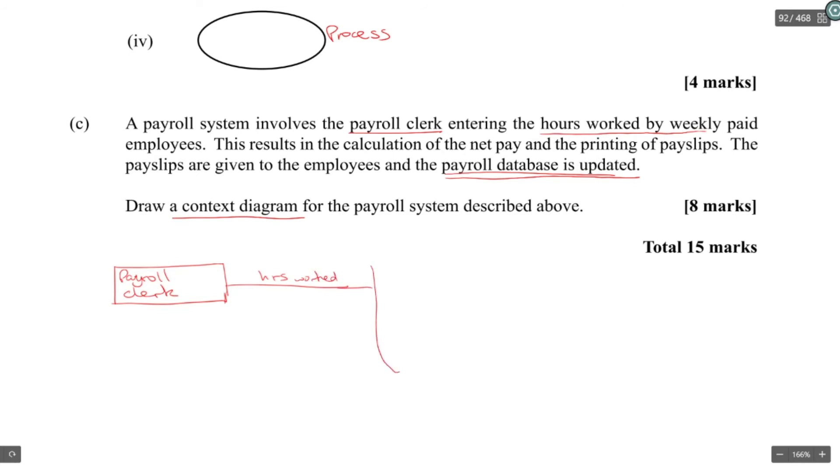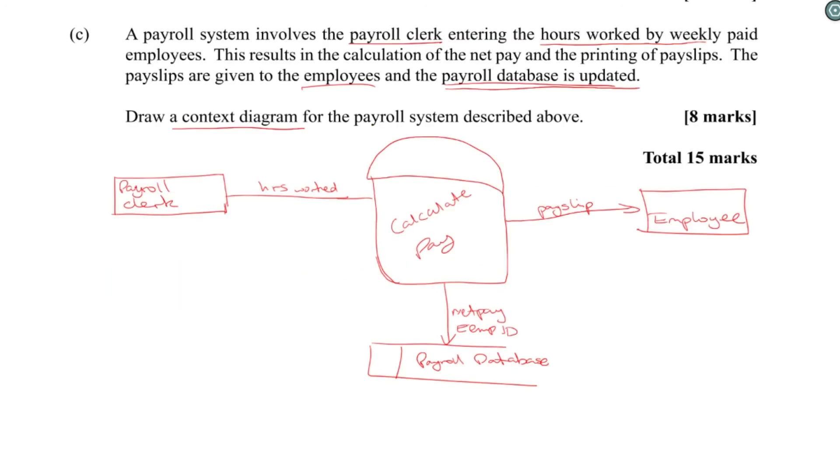But in order for that pay slip to be generated, you need to get information from the database. So you will update the database with the hours worked, but you also need to get from the database employee name and information and all that stuff. So you'll update the net pay and the employee ID, but you will also pull up from the database the information.